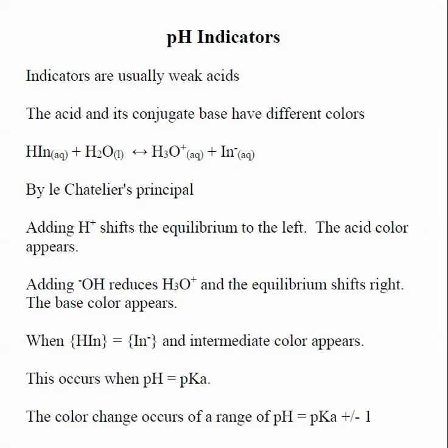pH indicators are a useful tool that allow us to know when we've reached a particular pH during an acid-base titration. The indicators themselves are typically weak acids, and what happens is the acid and its conjugate base have different colors, so there is an acid equilibrium going on.